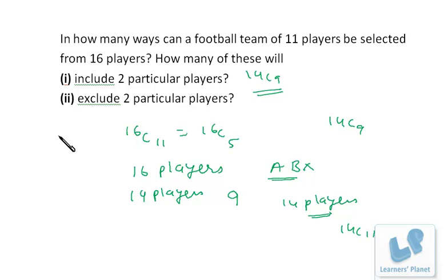So it's 14C11, that is 14C3. Got the difference between the three problems? The first one is 16C11, the second one is 14C9, and the third one is 14C3. Getting my point? When we are including two particular players and when we are excluding two particular players.